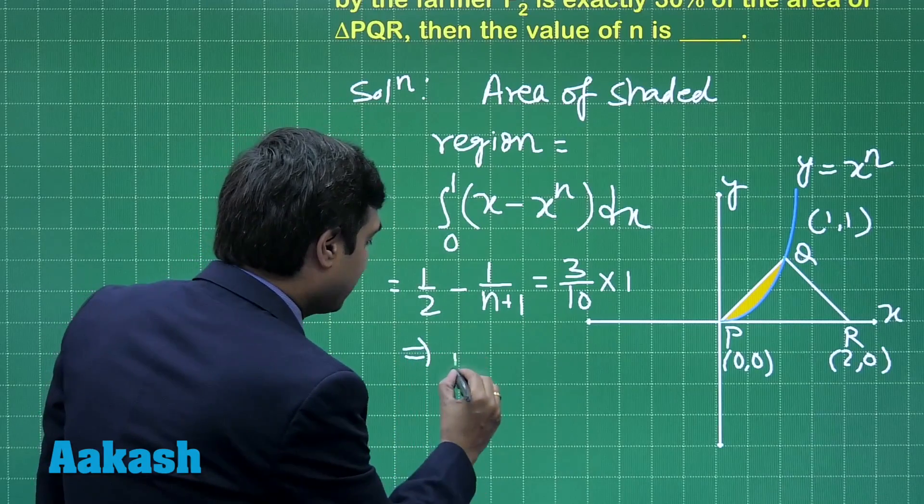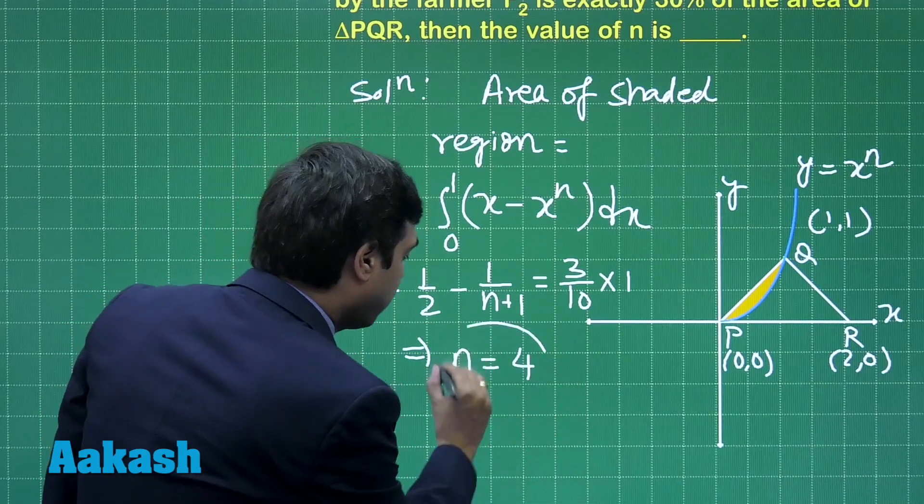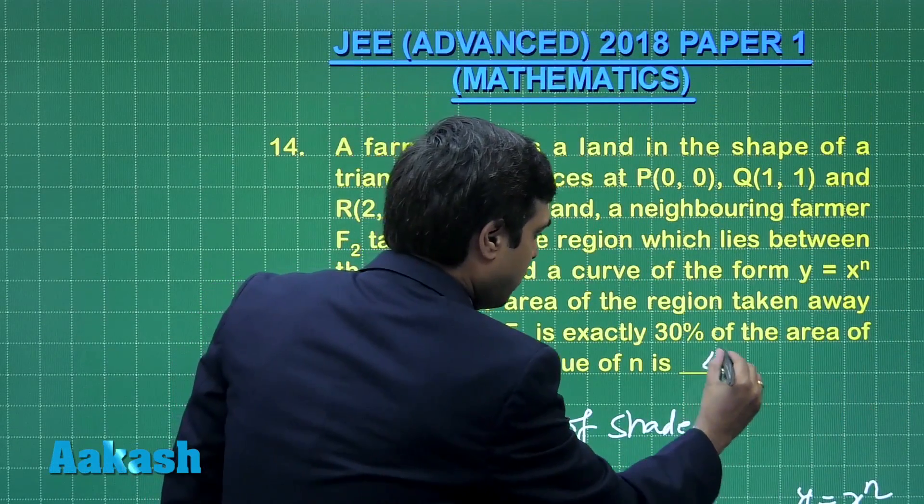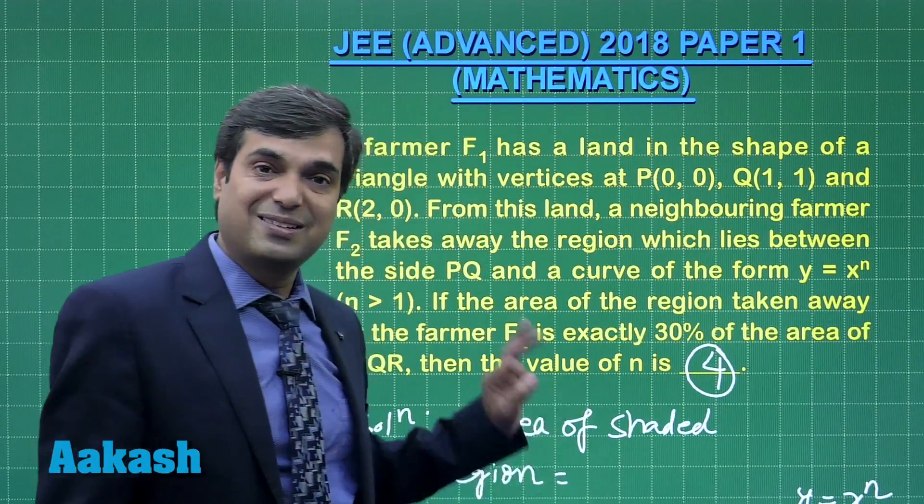Just simplify to get the value of n as 4. So the correct answer for this question is 4. So this is clear.